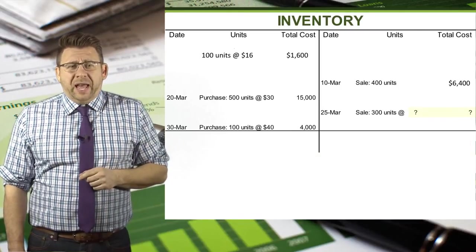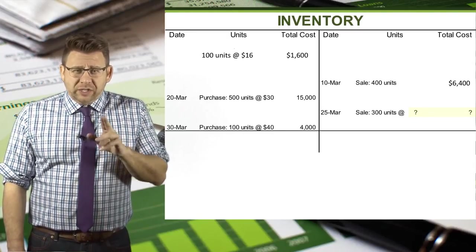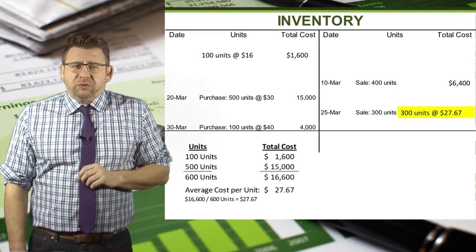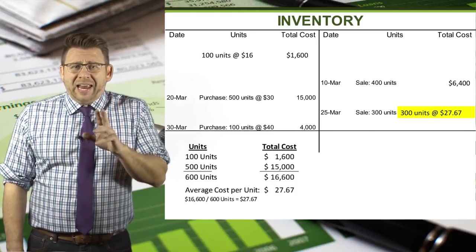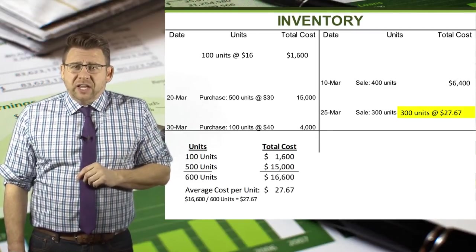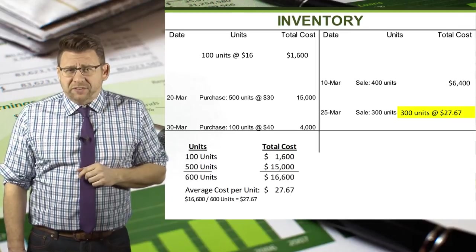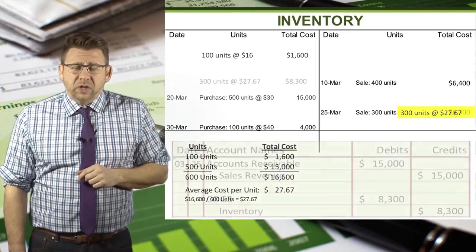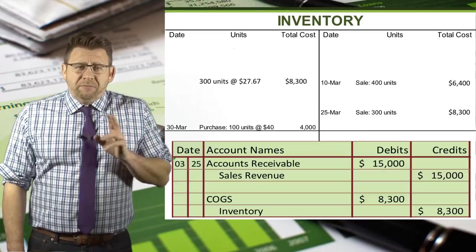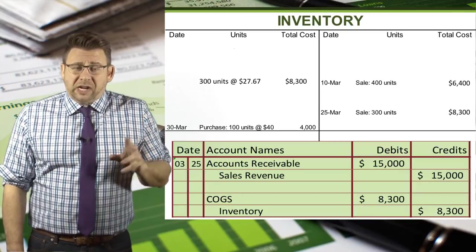The next decision we need to make happens with the sale on March 25th — we sold 300 units at $50 each. To figure out cost of goods sold using average cost, we take the 500 units purchased on March 20th and add them to the 100 units remaining after the prior sale, along with their total costs, and divide to get average cost. From the slide, we get an average cost of $27.67 per unit. So cost of goods sold on March 25th is approximately $8,300, and the inventory at this point is 300 units remaining with an average total cost also of approximately $8,300.